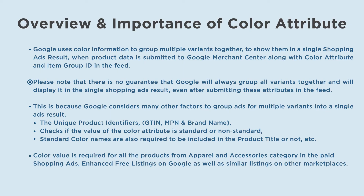Please note that there is no guarantee that Google will always group all variants together and display them in a single shopping ads result even after submitting these attributes in the feed. This is because Google considers many other factors to group ads for multiple variants into a single ads result. For instance, Google considers the unique product identifiers — MPN, GTIN, brand name — and checks if the value of the color attribute is standard or non-standard. Standard color names are also required to be included in the product title.